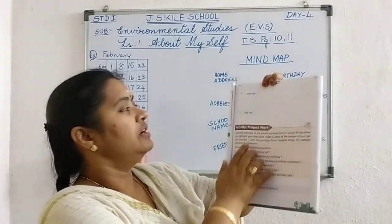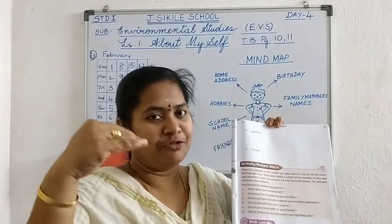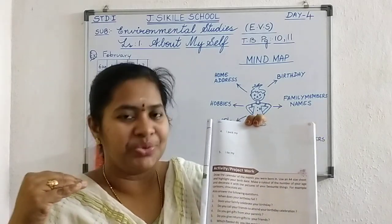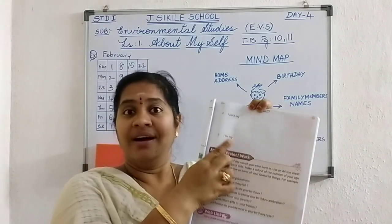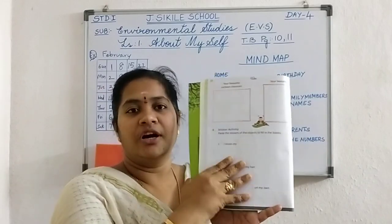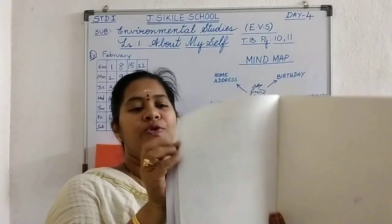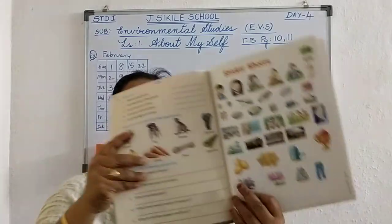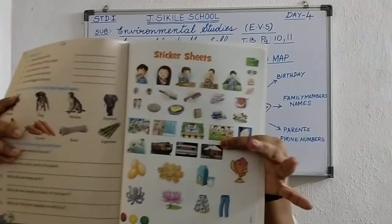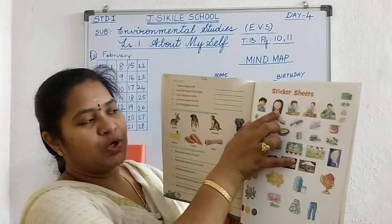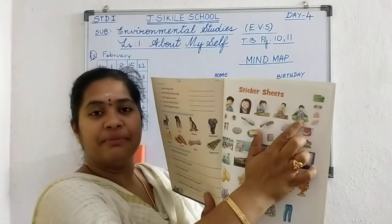Coming to the next page — page number 11. I pack my lunch or school bag. Mommy will help you, but you are in first standard so small, small things you can do on your own. So you can pack your bag. Then, I tie my shoe lace. Now, these stickers are given in your EVS textbook at the back — two sticker pages are there. I brush my teeth, I comb my hair, I eat my food on my own, I pack up my school bag, and I know how to tie my shoe lace.